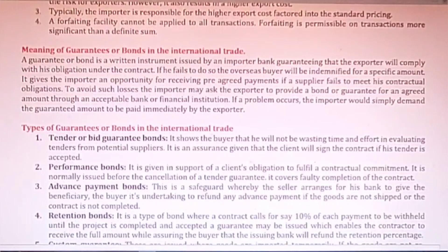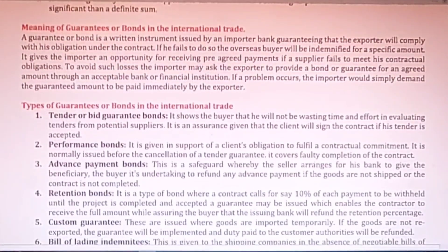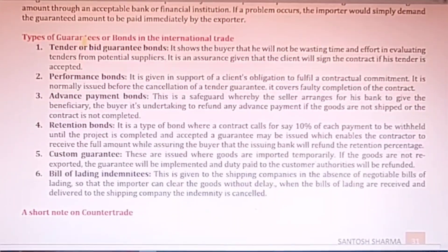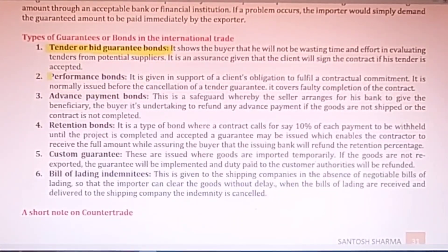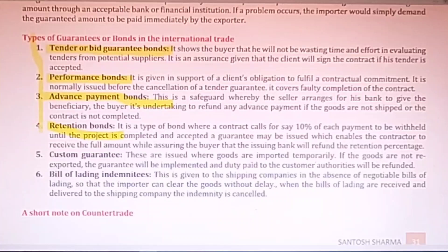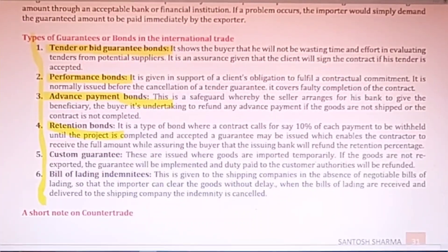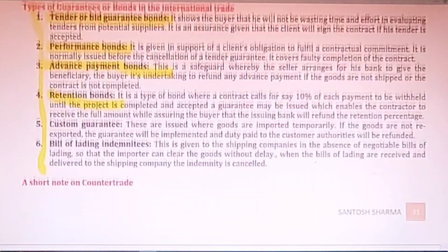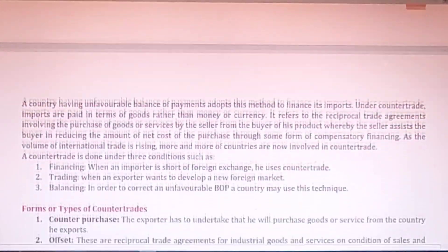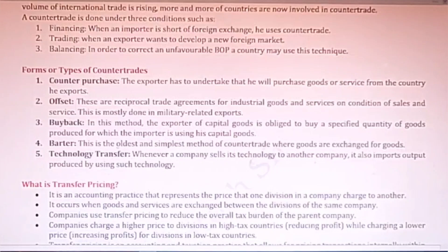Then we have guarantees or bonds in international trade. Different types include: tender or bid guarantee bonds, performance bonds, advance payment bonds, and retention bonds. You can explain each of these one by one. There is also a short note on counter trade — you can go through this topic as well.